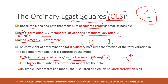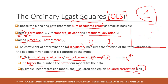In simple linear regression models, R-squared also equals the squared correlation between X and Y. R-squared is a value between 0 and 1. If your model fits the data well, the model will have a very high R-squared. If your model doesn't fit the data well, it will have a very low R-squared.